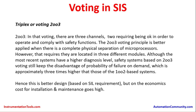It is better to go for triplex CPU-based PLCs — this is a triple modular redundant (TMR) architecture, with processors located in 3 different modules. Although the most recent systems have a higher diagnostic level, safety systems based on 2 out of 3 voting still have the disadvantage that the probability of failure on demand is approximately 3 times higher than those of a 1 out of 2 based system. That is why 2 out of 3 requires detailed engineering to implement properly.